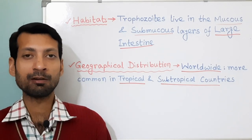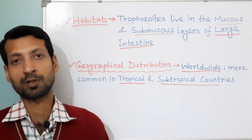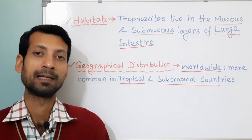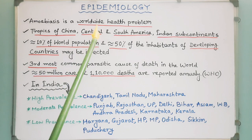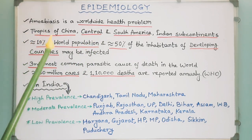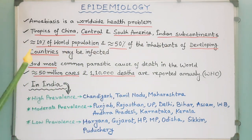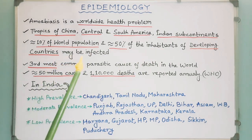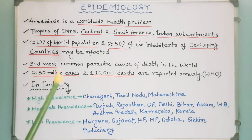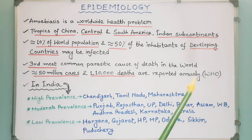Geographical distribution: Entamoeba histolytica is worldwide in distribution, but more common in tropical and subtropical countries. It has been found wherever sanitation is poor in all climatic zones. The disease amoebiasis is a major health problem worldwide. The largest burden occurs in the tropics of China, Central and South America, and the Indian subcontinent. About 10% of the world population and 50% of inhabitants of developing countries may be infected. It is the third most common parasitic cause of death in the world, with approximately 50 million cases and 110,000 deaths reported annually by WHO.